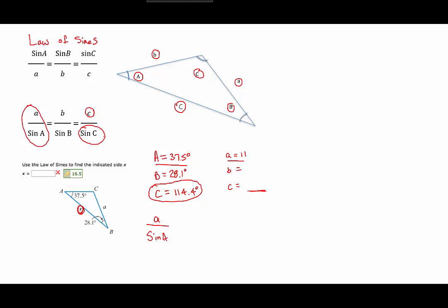So side A over the sine of angle A is equal to C over the sine of angle C. And so we'll just fill these things in then. We have 11 over the sine of 37.5 degrees is equal to C or in other words, X, what we're looking for here, the side opposite angle C, over the sine of angle C, which is 114.4 degrees.